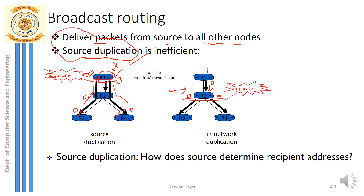However, once the packet reaches R4, R4 also has neighbors R3 and R2. So R4 will create two packets: one sent to R3 and one sent back to R2. This is a drawback — the duplication problem at R1 is avoided, but routers with multiple neighbors may still send multiple duplicate copies to their neighbors.